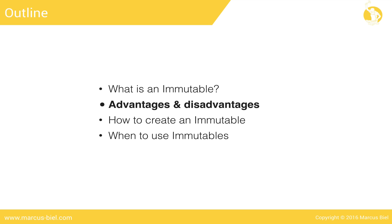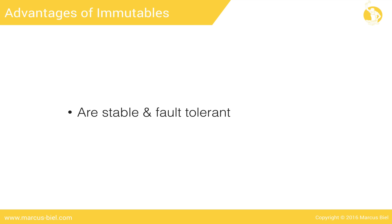So far this seems useless. Why should you bother with immutables? What advantages will they bring you? First of all, immutable classes greatly reduce the effort needed to implement a stable and fault-tolerant system. After object creation, immutables can be in only one state, which seems very confining at first, but it's actually extremely beneficial. Let's see why.